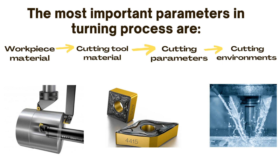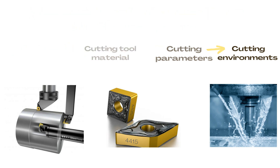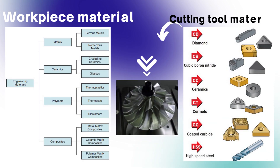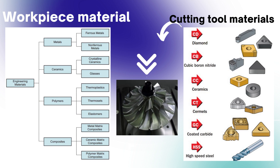These parameters must be selected correctly for successful turning operations. One of the most important parameters in turning is the workpiece material. The machinability of workpiece material directly affects cutting forces, tool wear, power consumption, as well as surface quality.